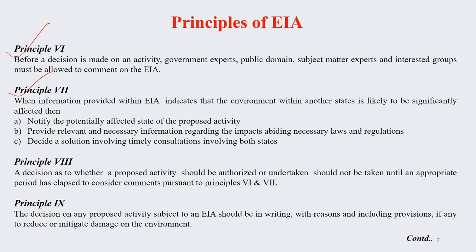Principle number 7: when information within EIA indicates that the environment of another state is likely to be significantly affected, we should notify the potential effect state of the proposed activity. We should never hide it. Provide relevant and necessary information regarding the impacts, avoiding violation of laws and regulations. Decide a solution involving timely consultations with both the implementing state and all states affected or potentially going to be affected by the project.